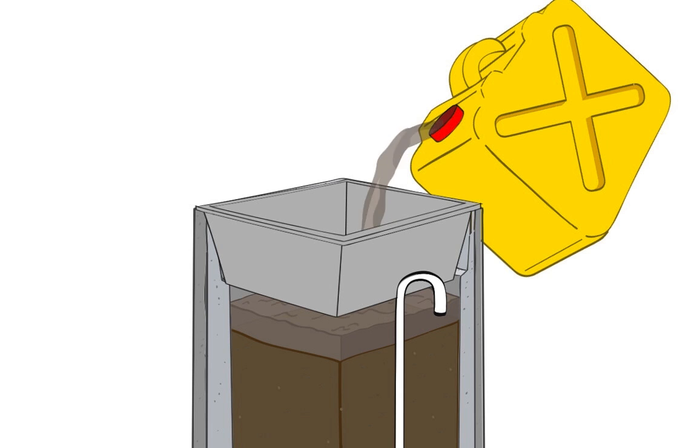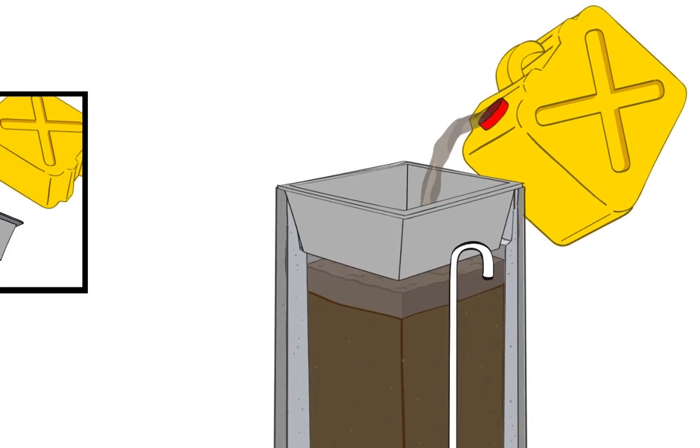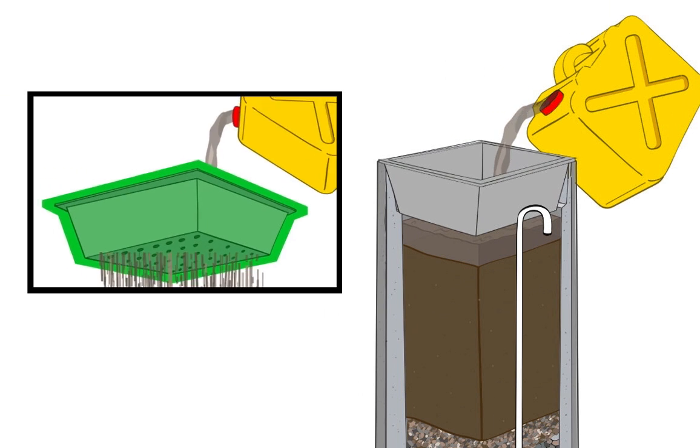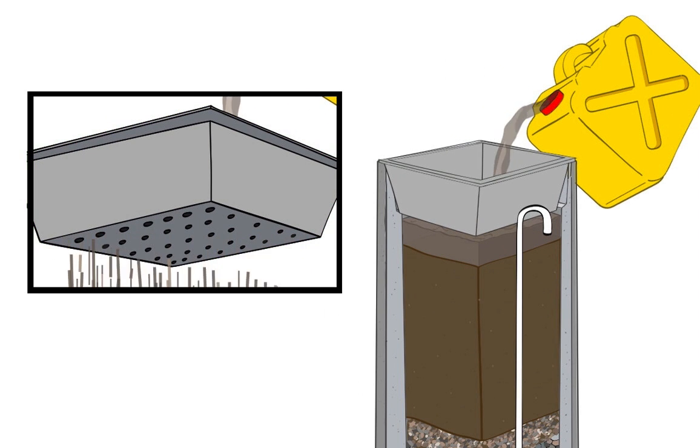Starting at the top, the water is poured into the reservoir, then flows through the diffuser. It has many tiny holes to slow the flow of water.